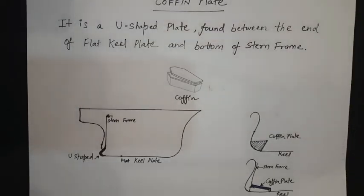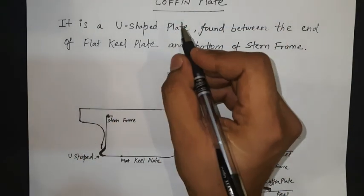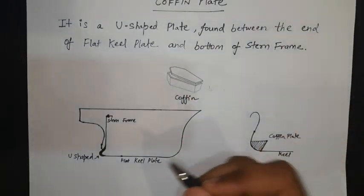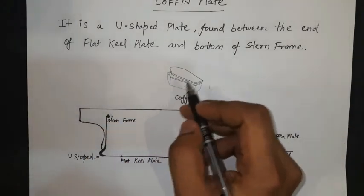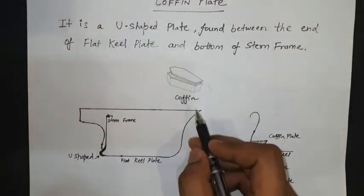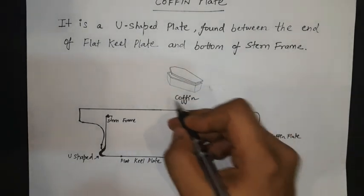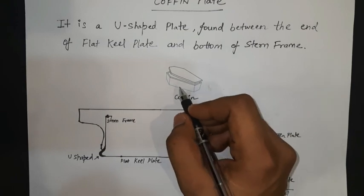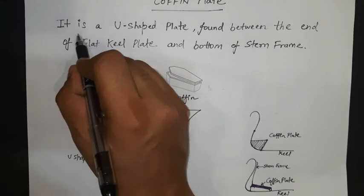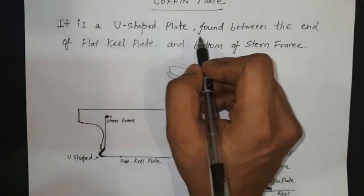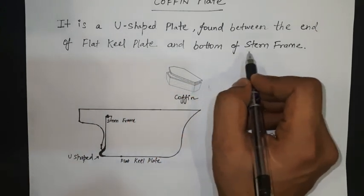Moving further. Next, the coffin plate. Many candidates do not know where the coffin plate is. As you all know, the coffin is a coffin box — the box in which a dead body is placed. In ship construction, the definition of coffin plate is: it is a U-shaped plate found between the end of the flat keel plate and the bottom of the stern frame.